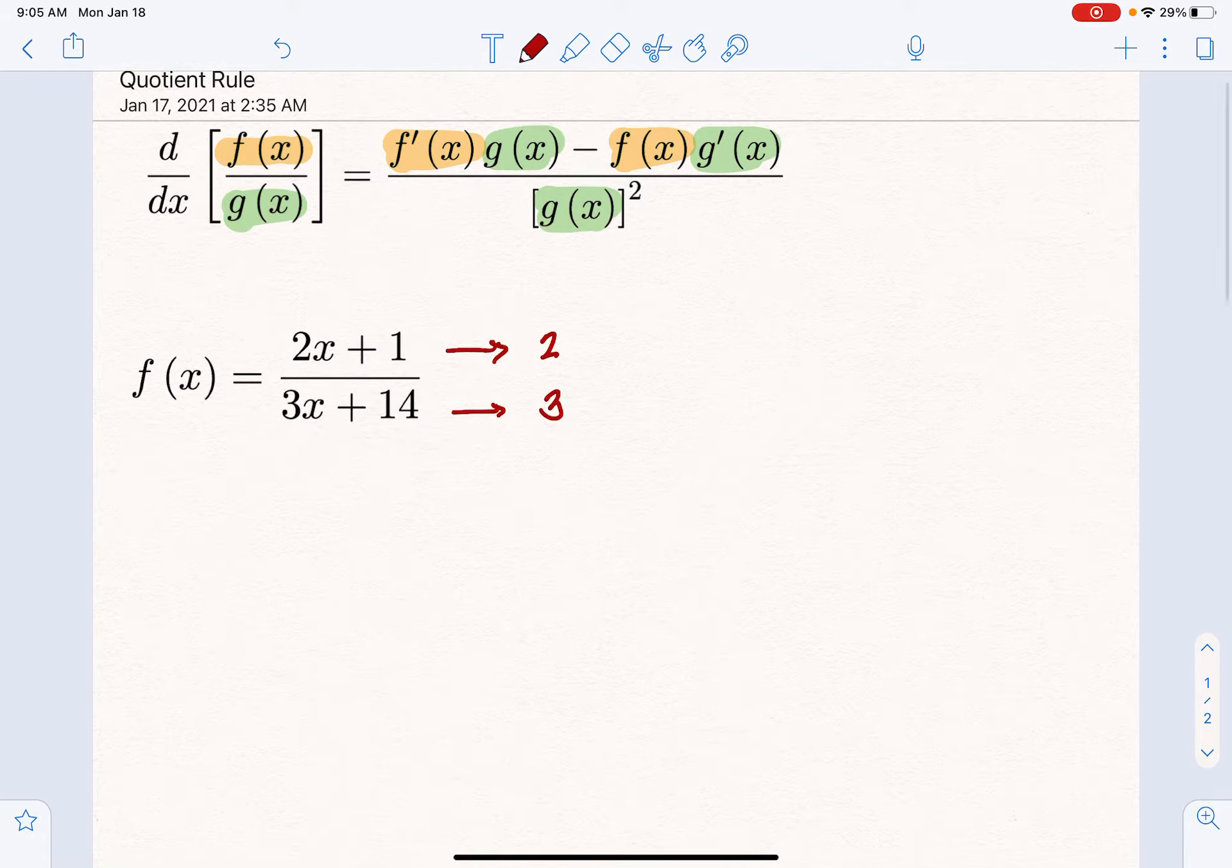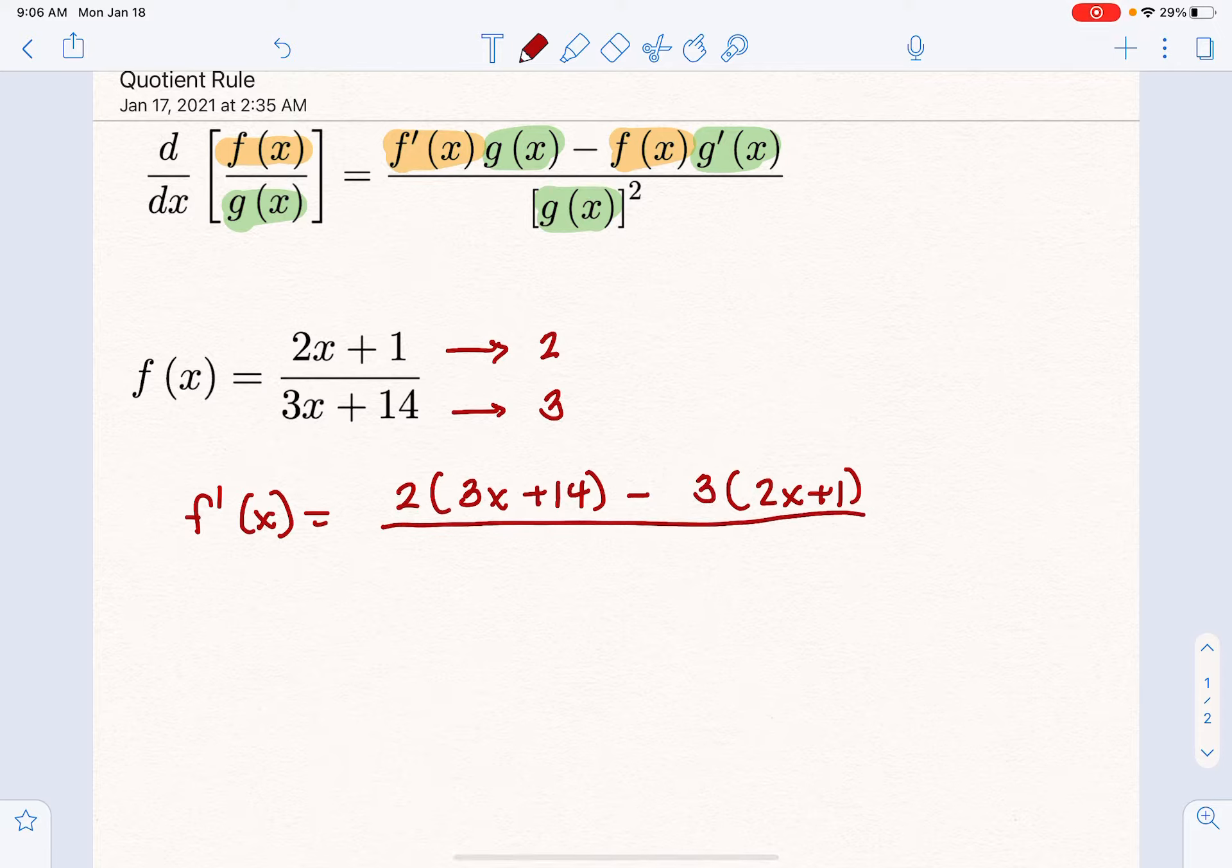That means the derivative of the quotient is the derivative of the numerator times the denominator—notice it's kind of a crisscross thing—minus the numerator (which I'm going to write in parentheses, 2x + 1) times the derivative of the denominator, which I'll just put out front as a 3, and then all over the denominator squared.